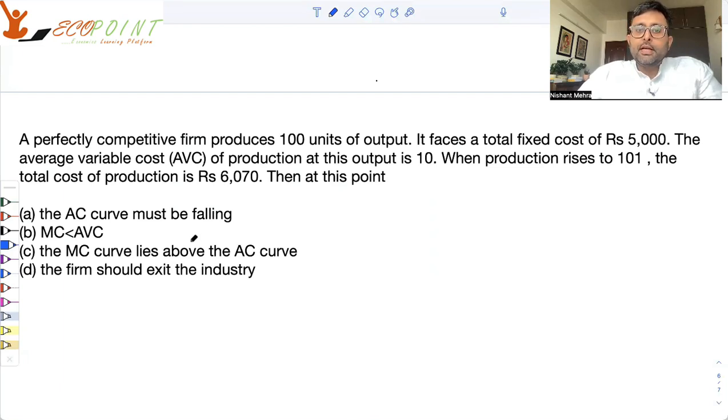A perfectly competitive firm produces 100 units of output. It faces a total fixed cost of 5,000 rupees. The average variable cost of production at this output is 10. When the production rises to 101, the total cost of production is 6,070. Then at this point,